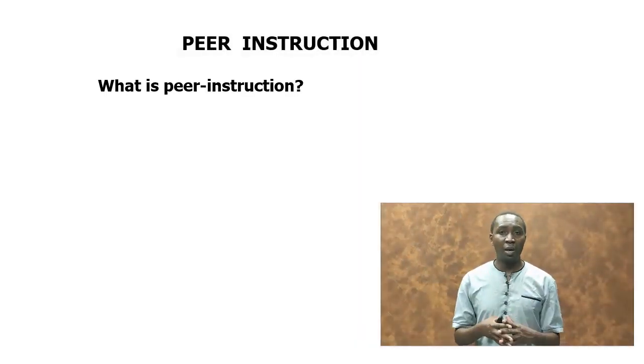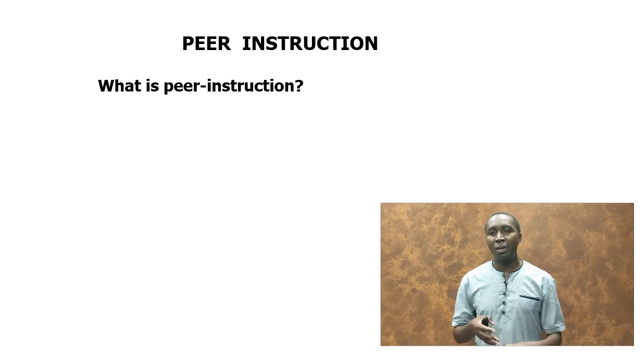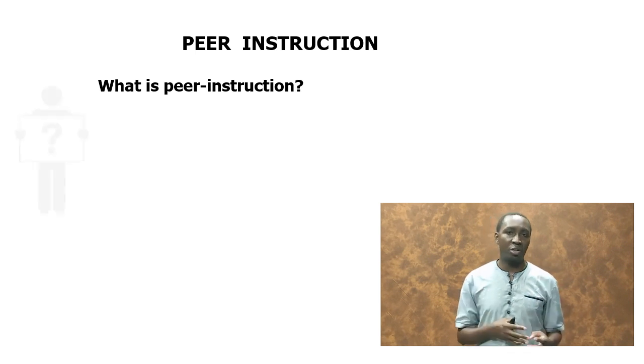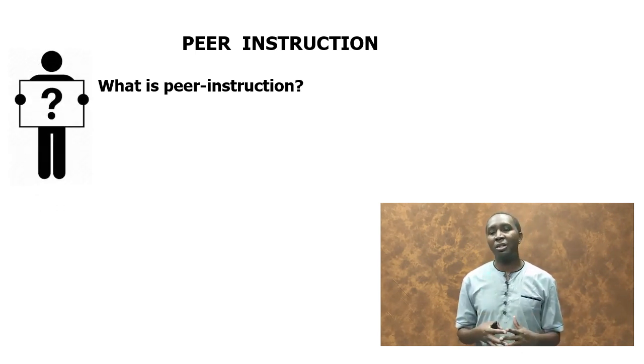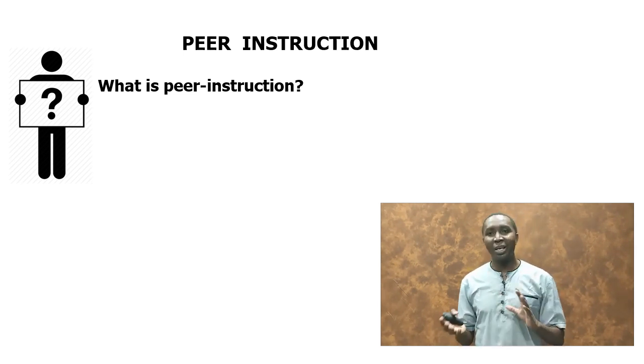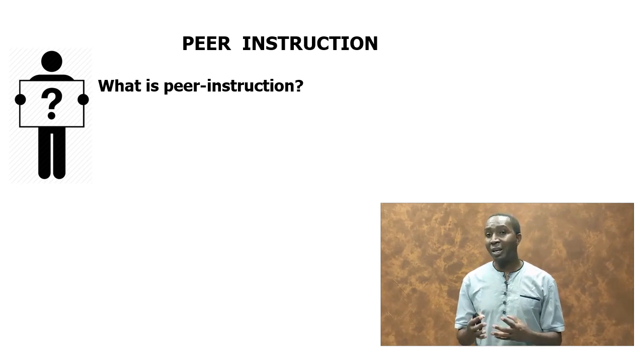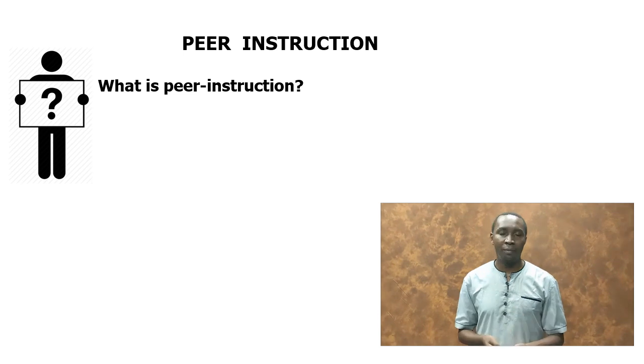Now we are going to discuss the different active learning strategies that are commonly used. These active learning strategies are research-based. One of the most commonly used active learning strategies is what we call peer instruction — a way of teaching where you involve peers, students as peers in the process of learning, participating in many ways to help each other when they are learning.